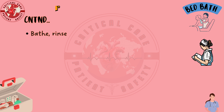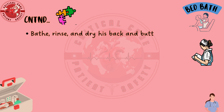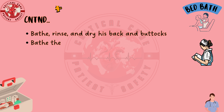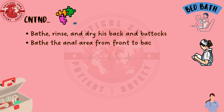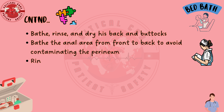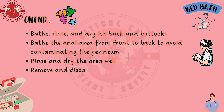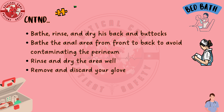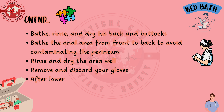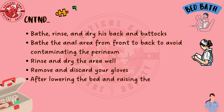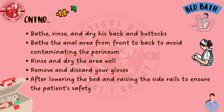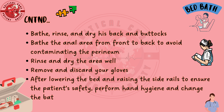Bathe, rinse, and dry his back and buttocks. Bathe the anal area from front to back to avoid contaminating the perineum. Rinse and dry the area well. Remove and discard your gloves. After lowering the bed and raising the side rails to ensure the patient's safety, perform hand hygiene and change the bath water again.